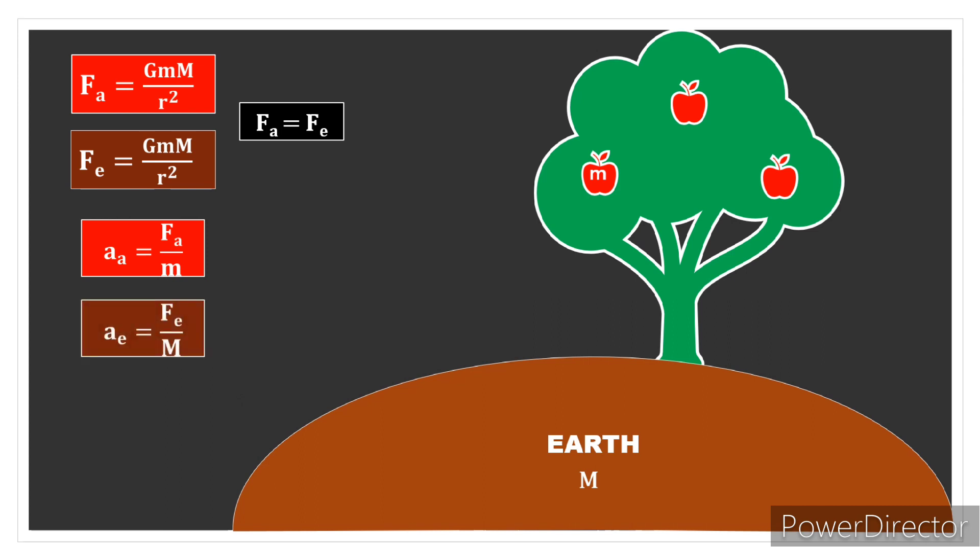The acceleration of Earth is the force acting on Earth divided by Earth's mass, F_e/M. Now, since F_a and F_e are the same, the masses decide the acceleration. The masses determine the acceleration.